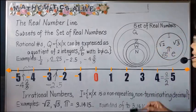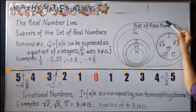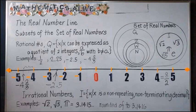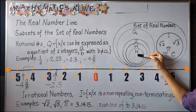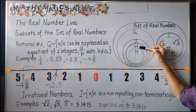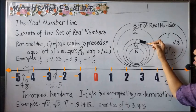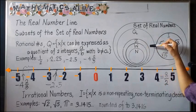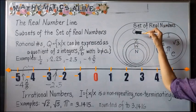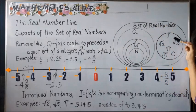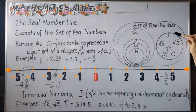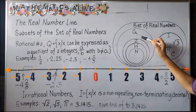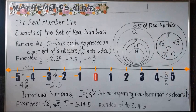We can see in this illustration that the set of real numbers is the universal set. Within it, the set of natural numbers is one subset, then the set of whole numbers, the set of integers, and the set of rational numbers — all nested as subsets. The set of irrational numbers is a disjoint set from the rational numbers, but put them all together and you have the set of real numbers.